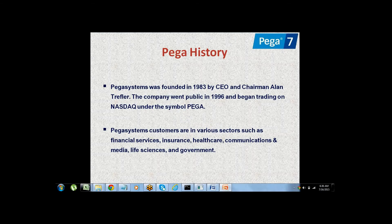Coming to the history of Pega 7, it started in the year 1983. It started as a middleware tool. Later they made some modifications and right now it is used as both a development tool and a middleware tool. It has inbuilt functionality. Using this Pega BPM tool, we can develop any type of web application.